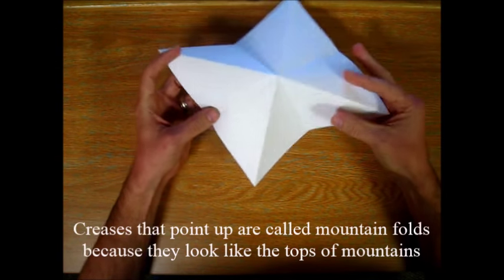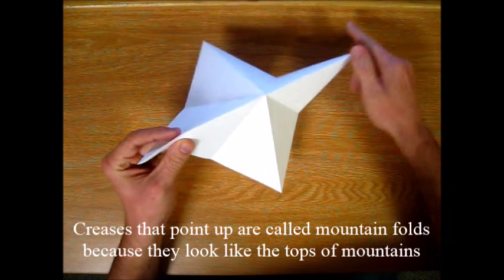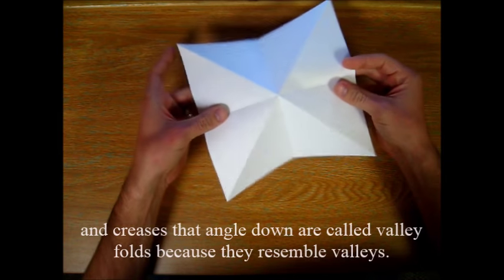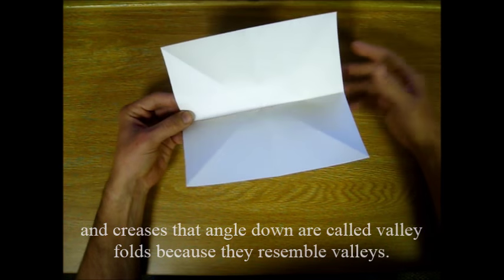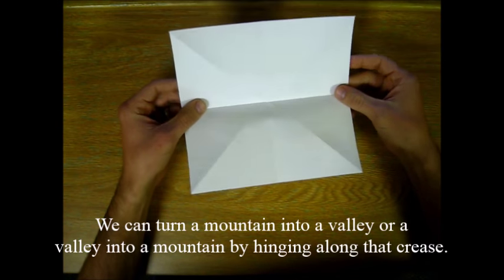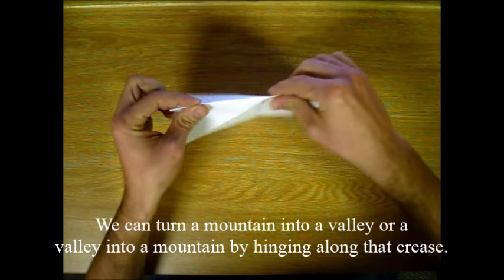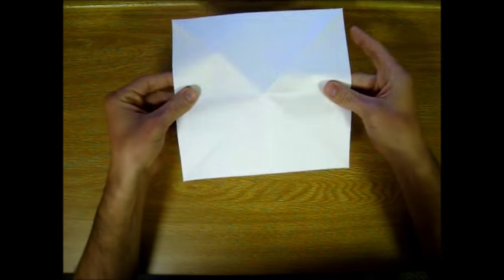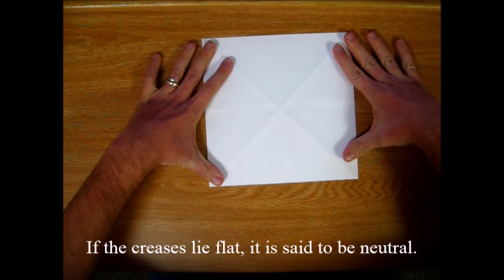Creases that point up are called mountain folds because they look like tops of mountains. And creases that angle down are called valley folds because they resemble valleys. We can turn a mountain into a valley or a valley into a mountain by hinging along that crease. If the creases lie flat it is said to be neutral.